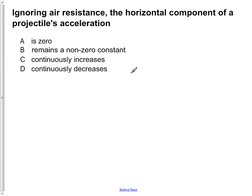Ignoring air resistance, the horizontal component of a projectile's acceleration: A is zero, B remains a non-zero constant, C continually increases, or D continuously decreases.